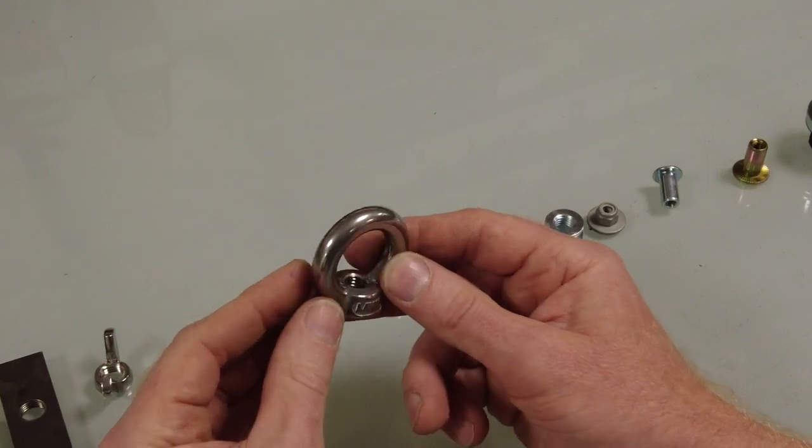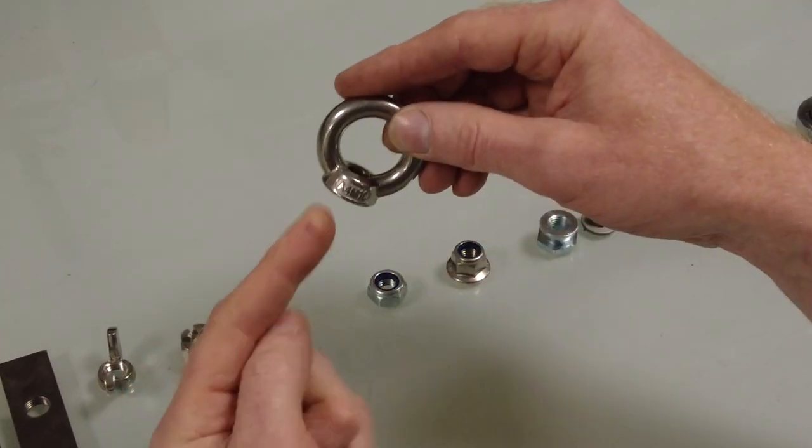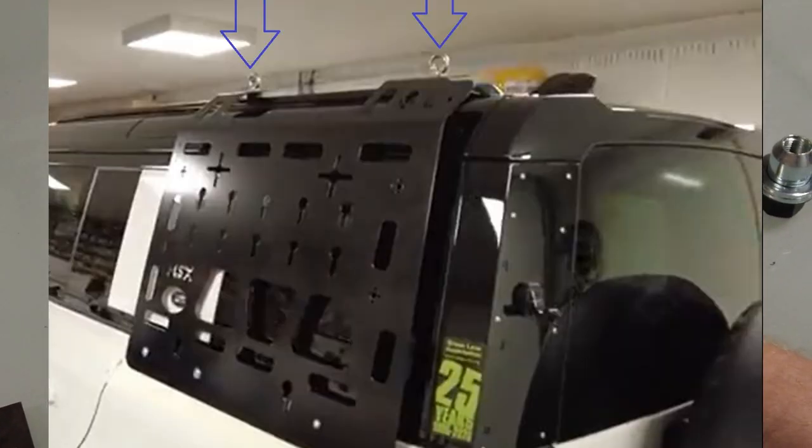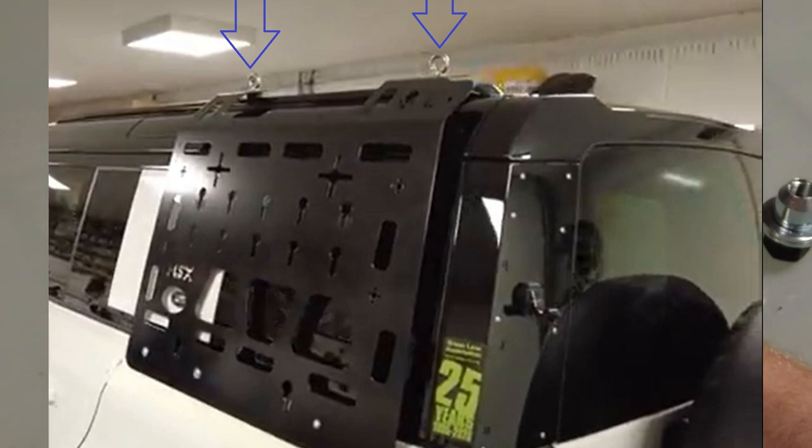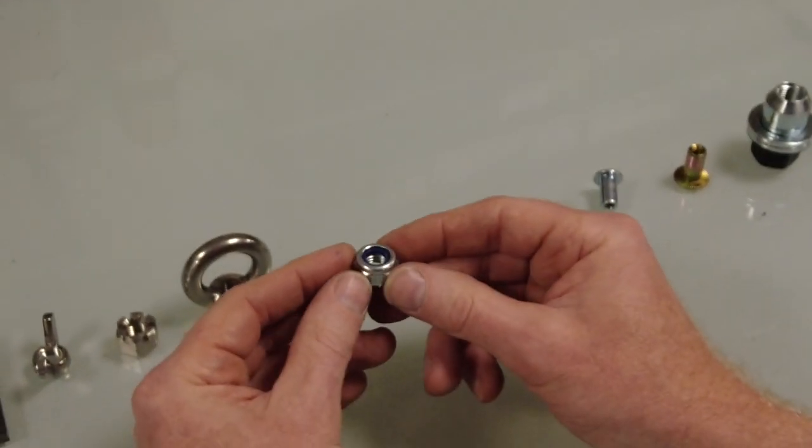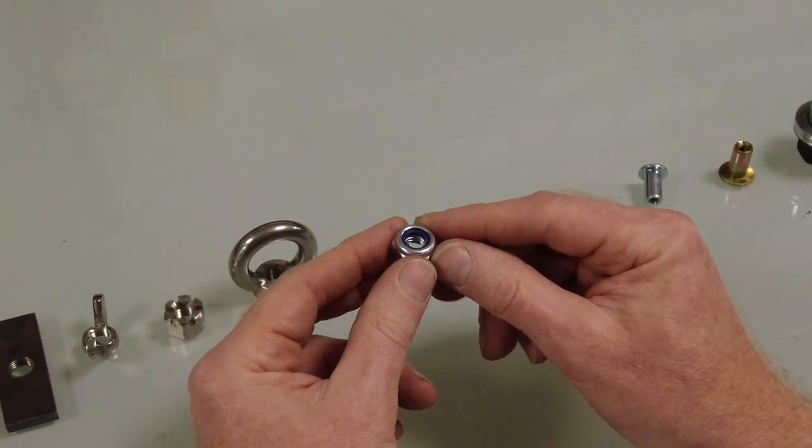You could get an eye bolt hook nut, so that's if you want at the end of a bolt to give yourself a lashing point. You could fit an eye nut on there.